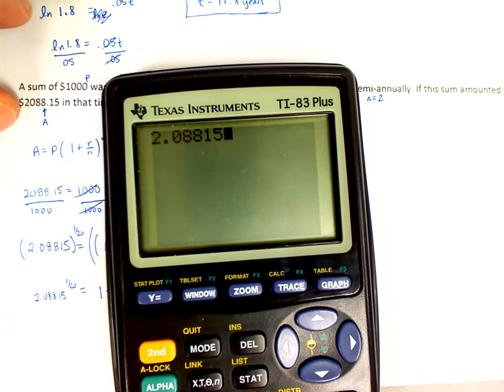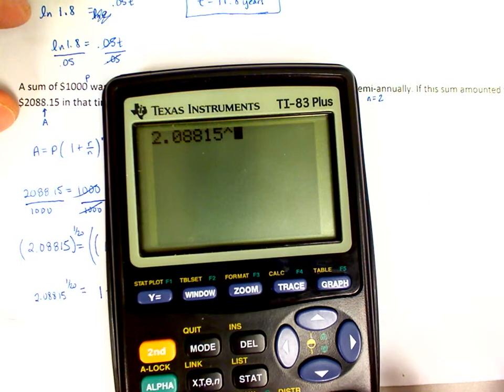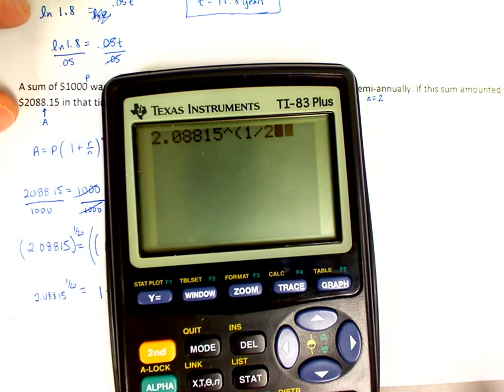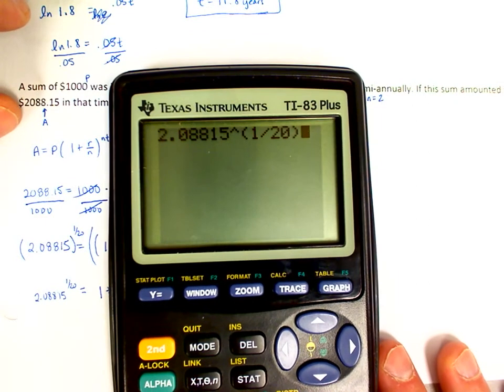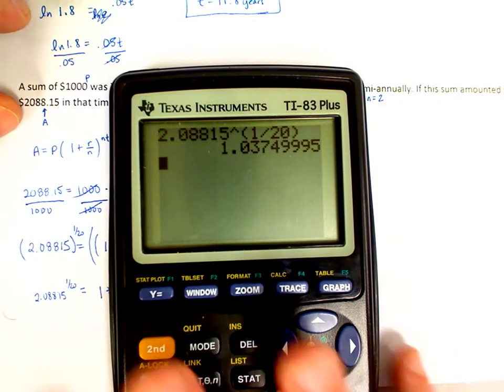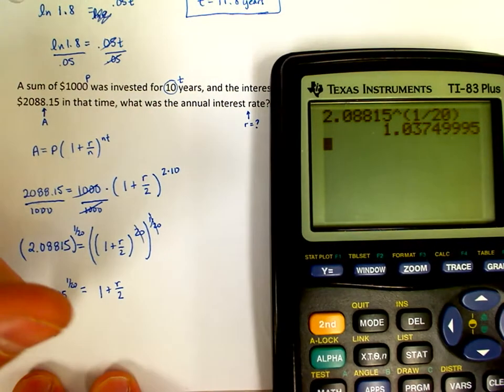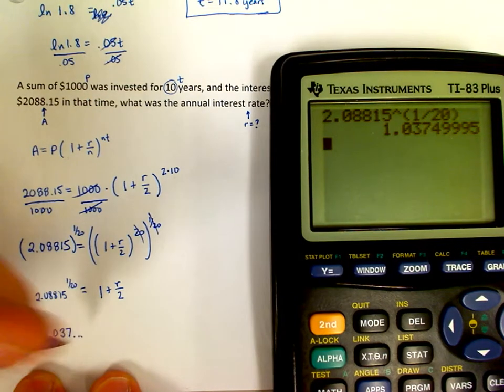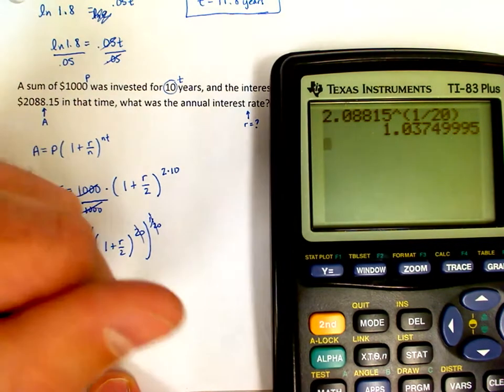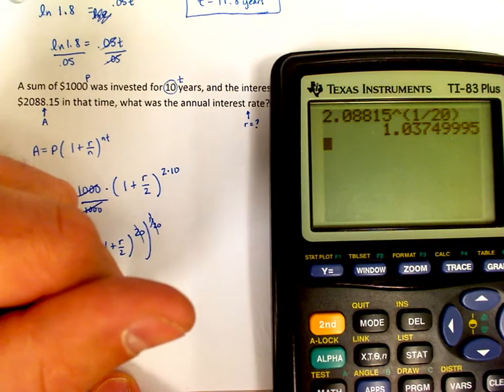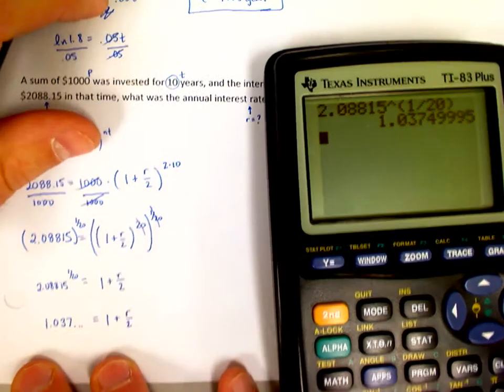2.08815 raised to the parentheses 1/20th power. The parentheses are absolutely important here. That's what I get. So it's 1.037 and I'm not going to round this value. I'm going to leave it stored in the memory of my calculator. 1.037 is equal to 1 plus R divided by 2. We're getting pretty close.